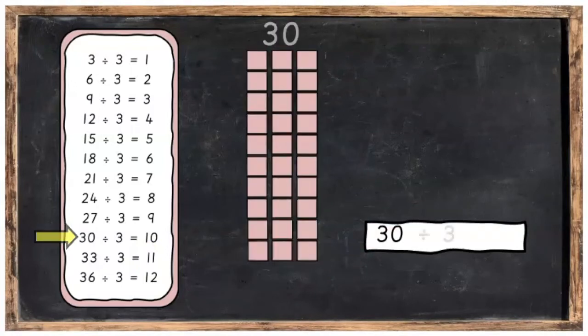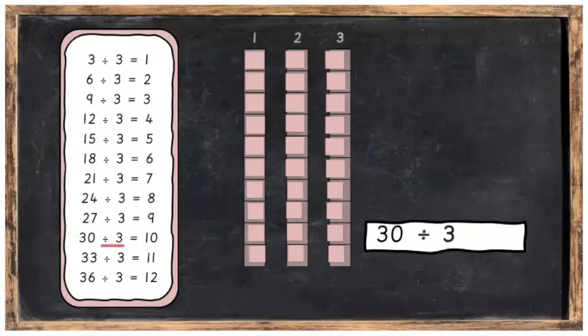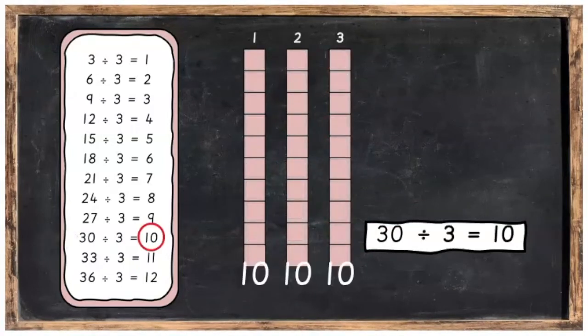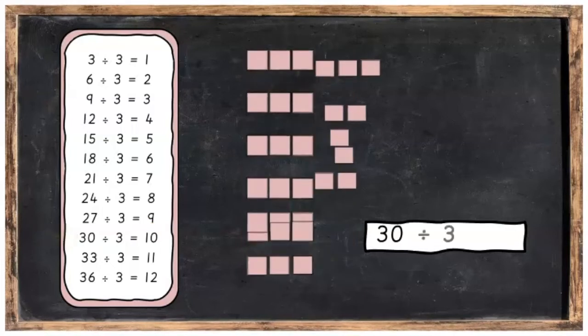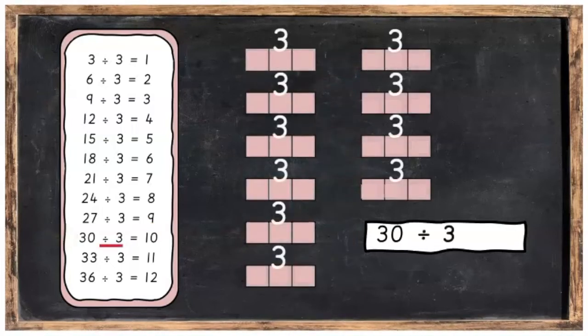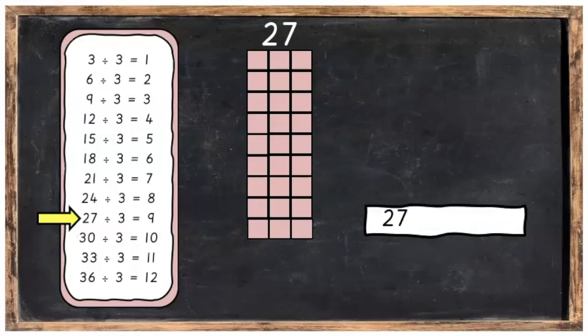30 divided into 3 equal parts, you're going to get 9 in each part. Or 30 divided into 3's and you're going to get 10 groups of 3.